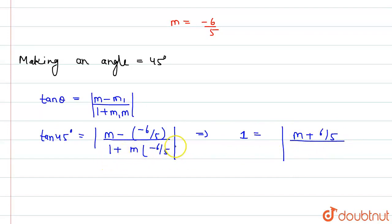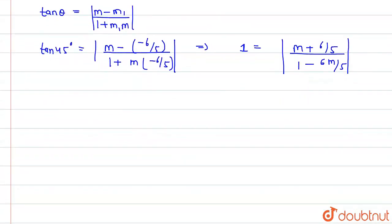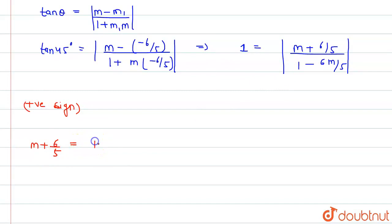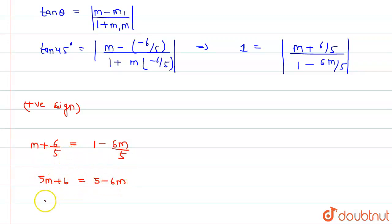Taking the positive sign first: (m + 6/5) / (1 - 6m/5) = 1, which gives 5m + 6 = 5 - 6m. So 11m = -1, meaning m = -1/11.